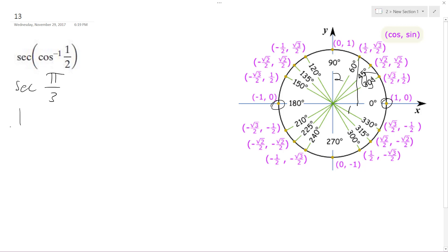So secant - and what the secant is is basically just one over cosine - so what that ends up being is one over one over two, which ends up being equal to two.